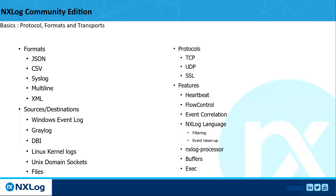For cases where flow control isn't possible — like UDP ingestion — buffers work well. We have either disk or memory-based buffers. We also have the option of event correlation on the edges — the hosts or wherever makes sense. This is mostly useful for smaller companies or where you want to correlate things on the edge so the data is already processed by the time it hits the SIEM.